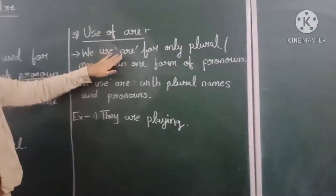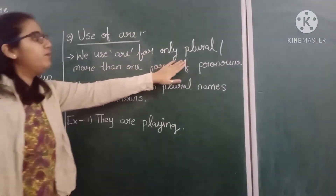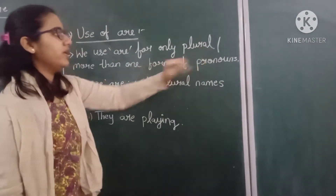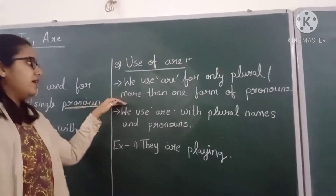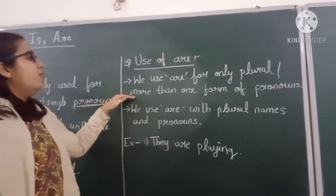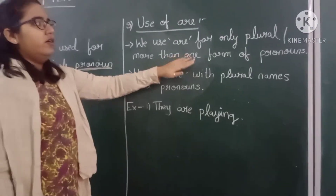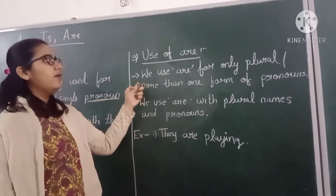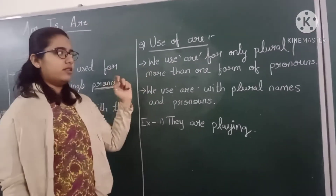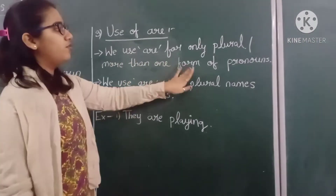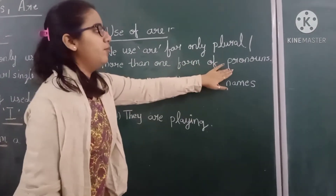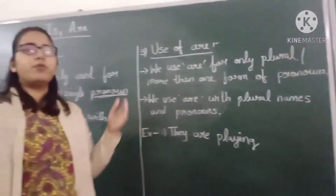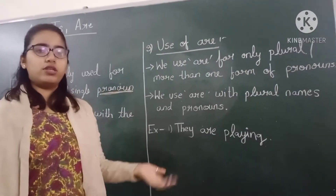We use 'are' for only plural — P-L-U-R-A-L. Plural means more than one. When there is more than one, we use 'are'. Also, if a pronoun in a sentence refers to more than one — plural — then we also use 'are'.